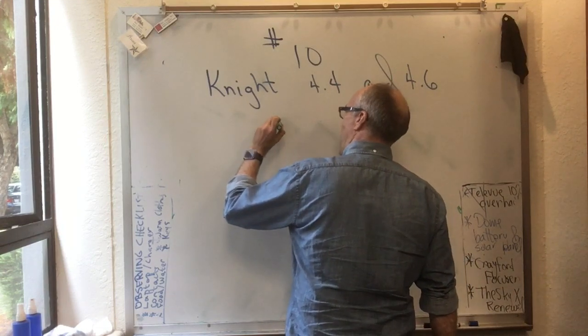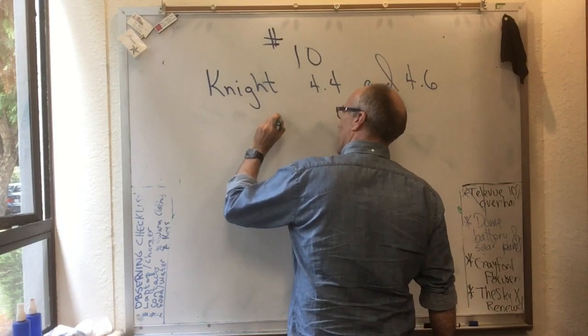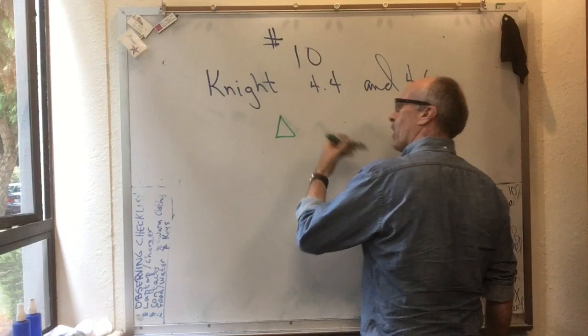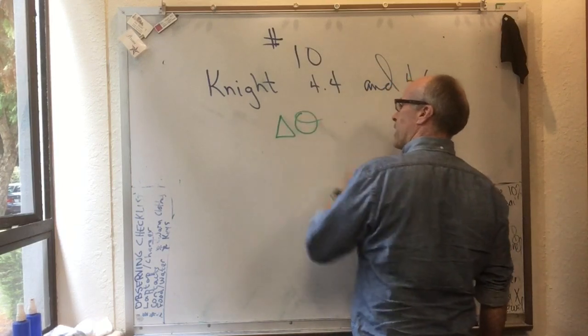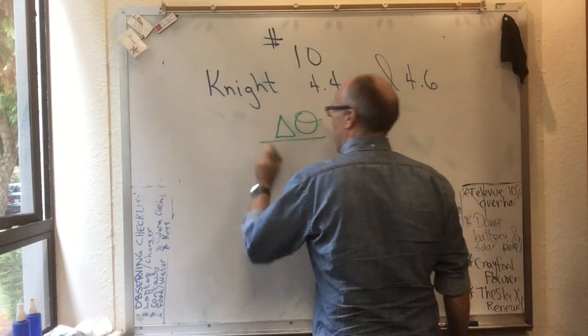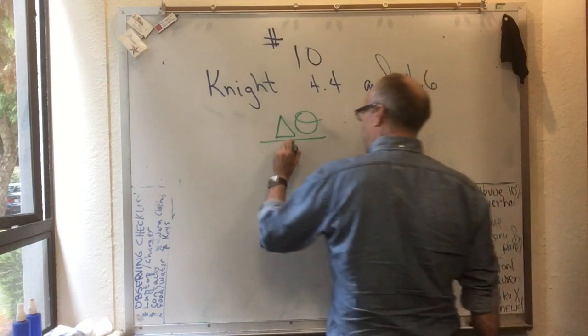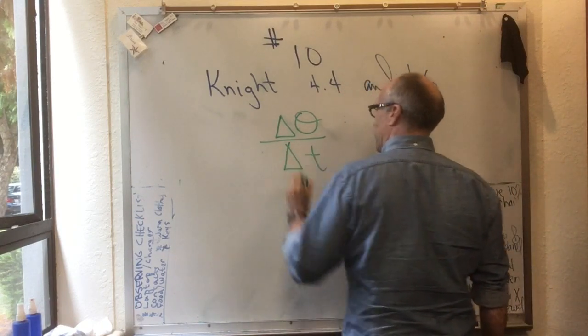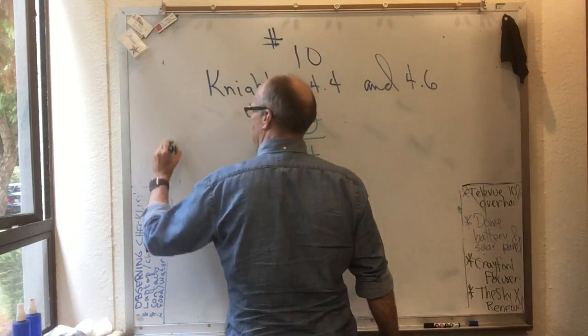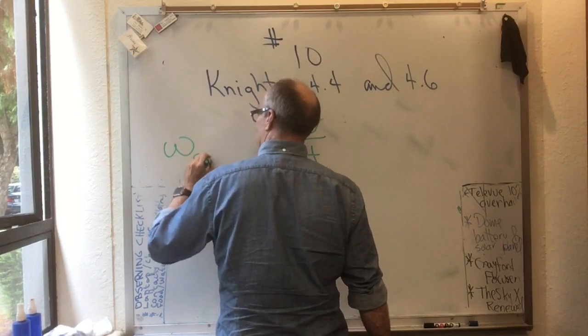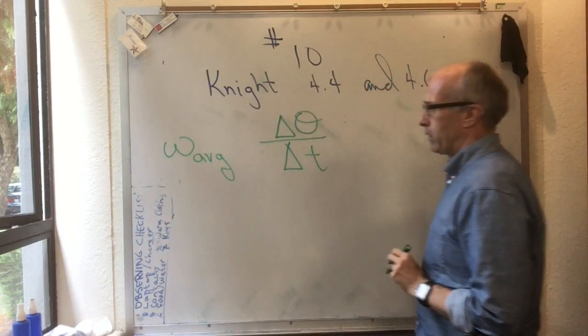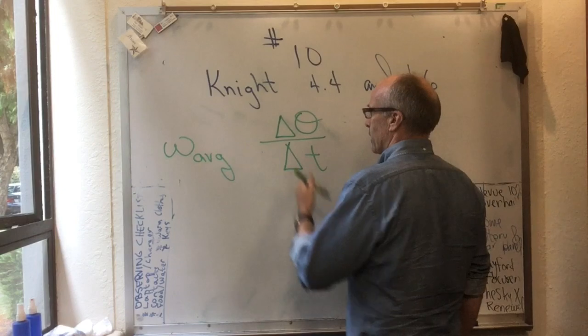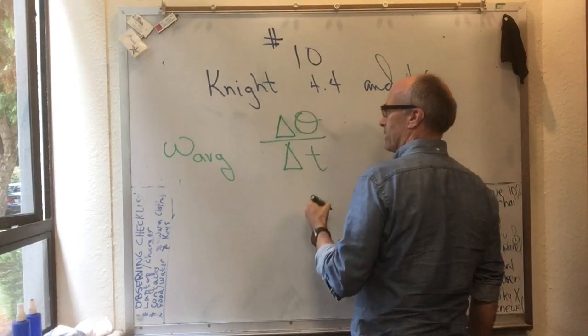If we wanted to talk about the average rate of change of angle, we would say the angle changed by amount delta theta, and it did that in a time delta t. And we can call that omega sub avg, the average angular velocity.